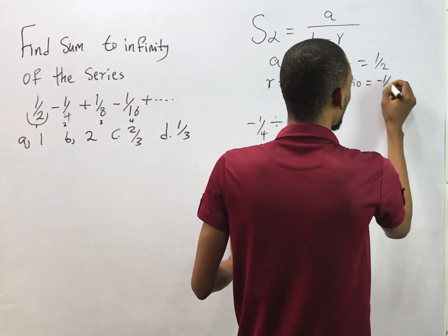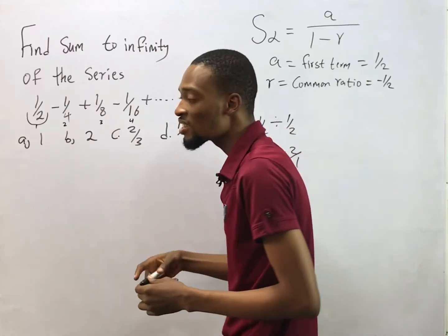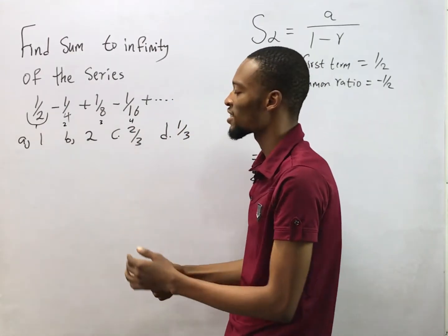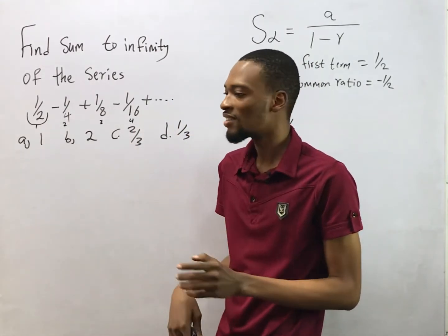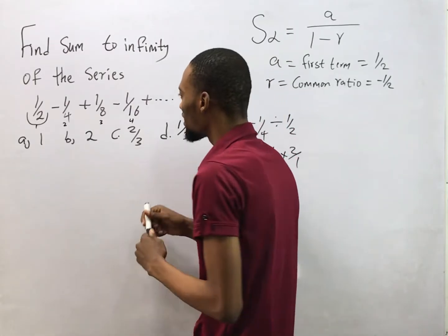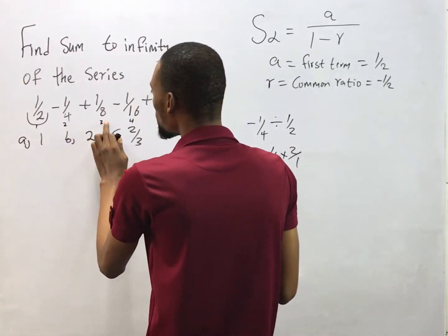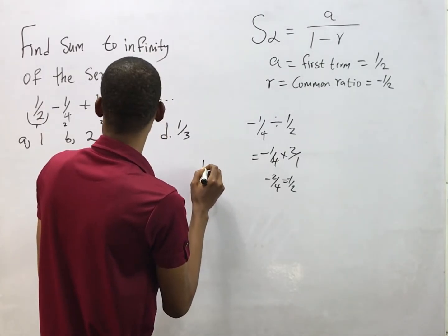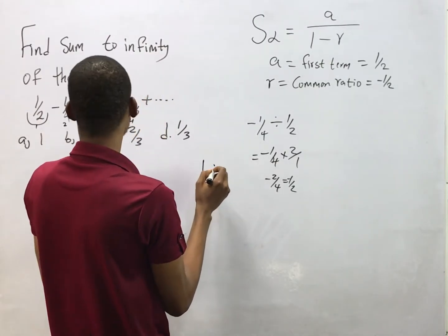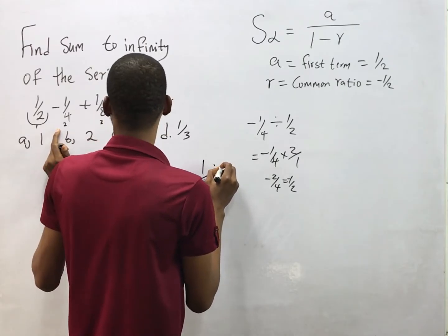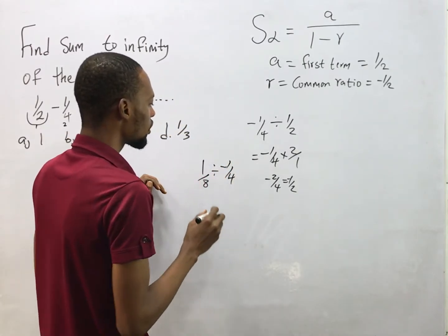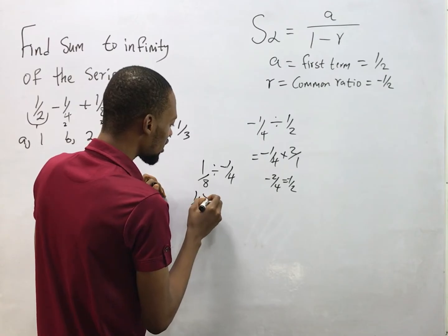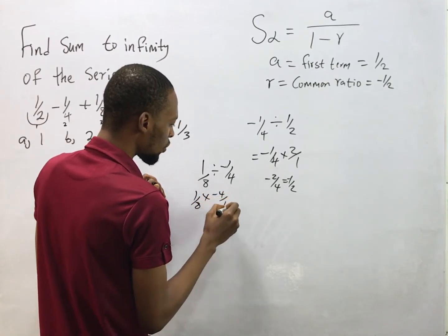You may be wondering, don't try the other numbers - no problem, let's do that. If I say okay, third term divided by second term, third term is 1/8 divided by second term which is -1/4. This will simply give you 1/8 times -4/1.